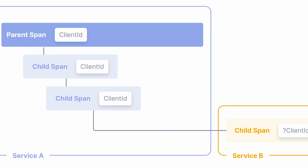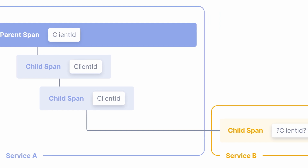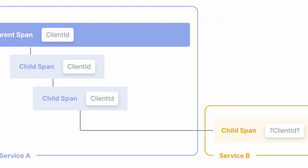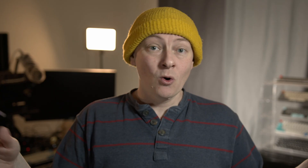And then finally, there's one more concept called baggage. Baggage is basically just contextual information that we might want to pass from span to span throughout the context of a trace, or maybe even from trace to trace throughout the context of our application. It's just data that we want to pass around to make sure that we understand the broader scope of things.